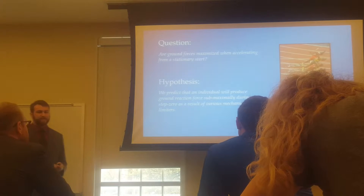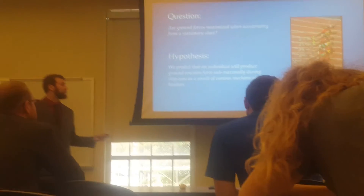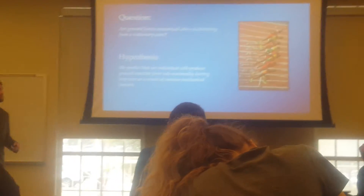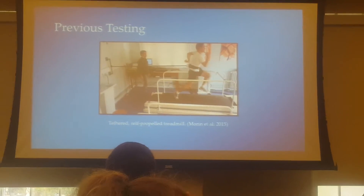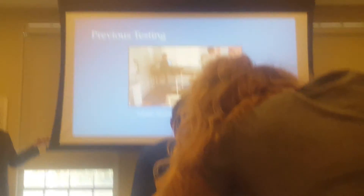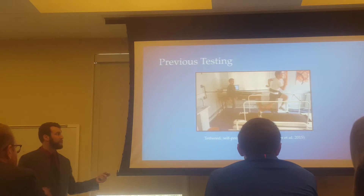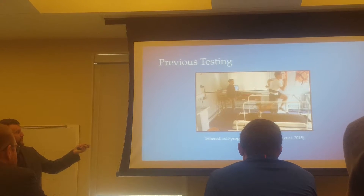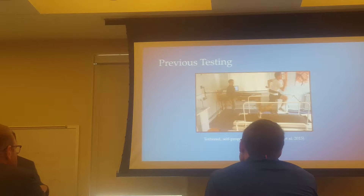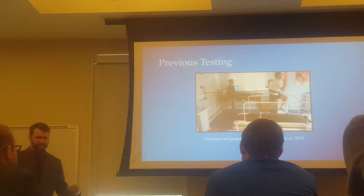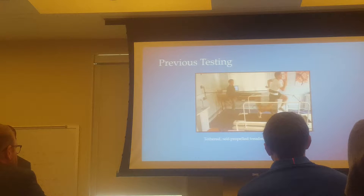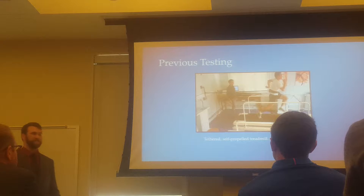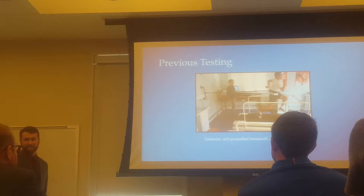So this brings us to our question: are ground forces maximized when accelerating from a stationary start? We predict that an individual will produce ground reaction force sub-maximally during step zero as a result of these balance and limiter constraints. Previous testing has looked at force production during a sprint using a tethered, self-propelled treadmill method, where the athlete is basically tied to a wall. We're questioning the validity of this method because it allows the athlete to get into an abnormally low angle to initiate their sprint, producing massive amounts of horizontal force not indicative of real life — because how many times are you doing a sprint while attached to a wall?